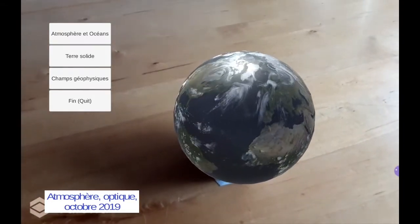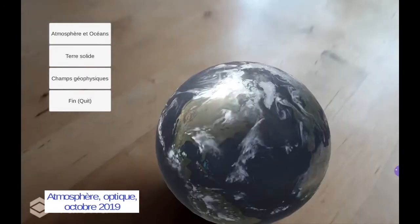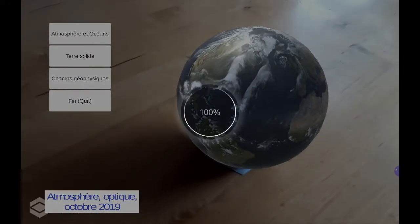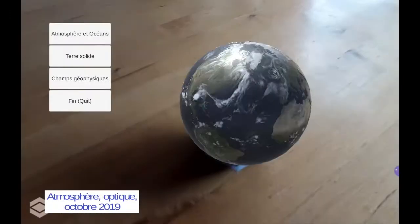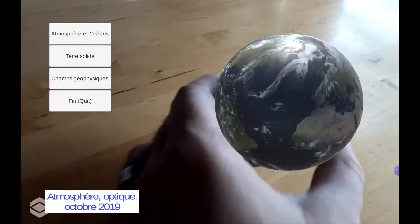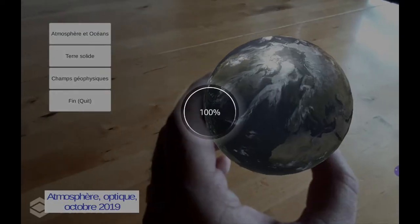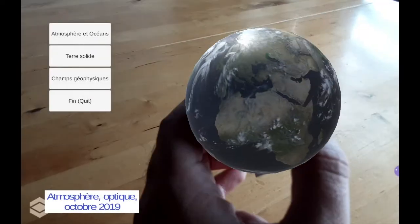So you can see different clouds and hurricanes, and if you grab the dodecahedron, you can grab the Earth in your hand and you can rotate it.